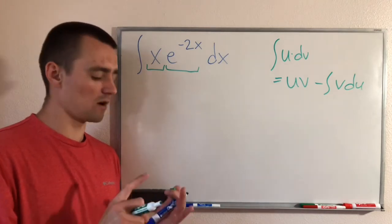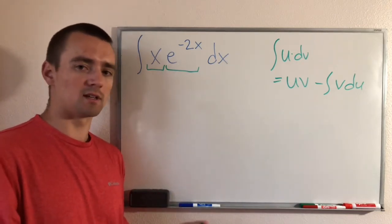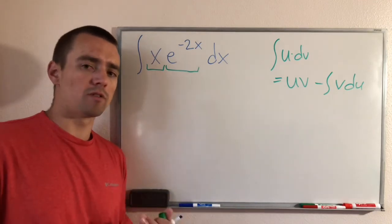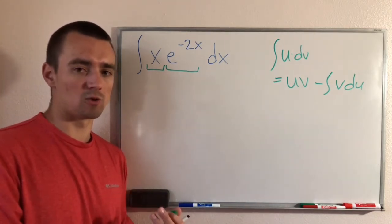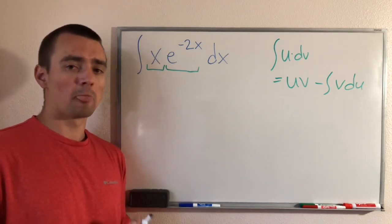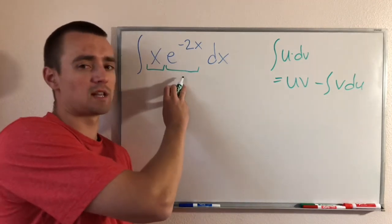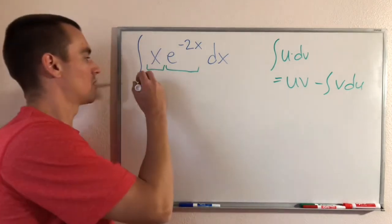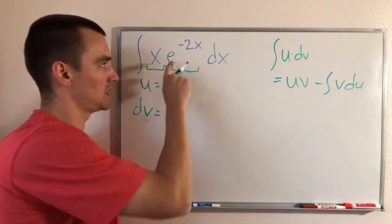The antiderivative of x is going to be an x-squared term multiplied by a constant, so you're going to be left with an x-squared term. Taking the derivative of x is a lot nicer than taking the antiderivative because a constant is a lot simpler to deal with than an x-squared term. On the other hand, both the derivative and the antiderivative of e to the negative 2x is just going to end up being some constant times e to the negative 2x, because the derivative of e to the x is e to the x. So it doesn't really matter which designation we put to the e to the negative 2x part, but x is a lot easier to take the derivative of.